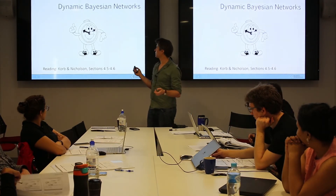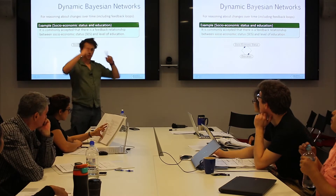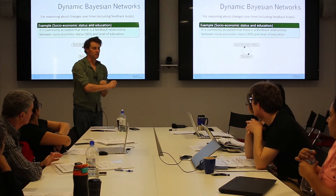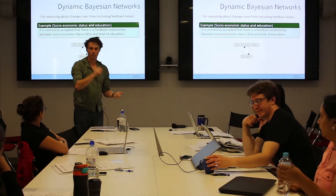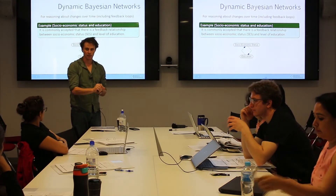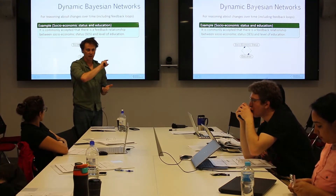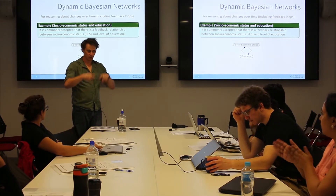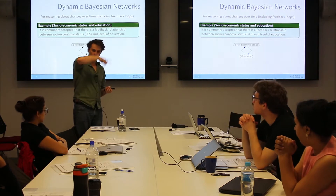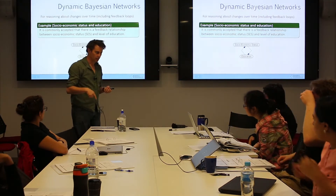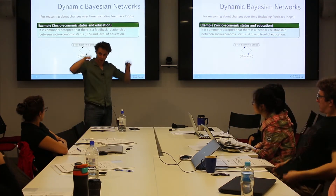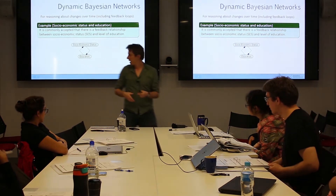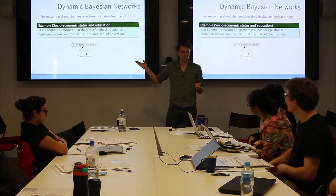Recall yesterday when I was defining a Bayesian network — it has variables, arcs, and conditional probability tables, and Bayesian networks have to be directed acyclic graphs. So everybody knows what that means: it can't have directed cycles. It can have two pathways going to the same node, but it can't have a feedback loop through it.